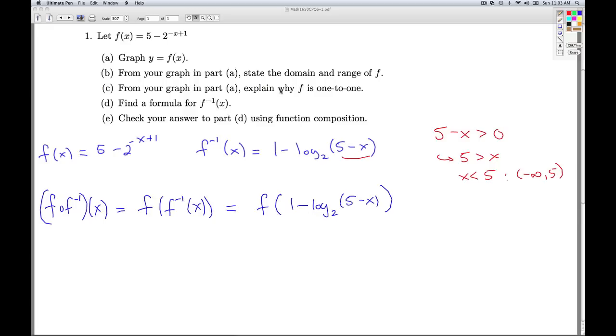So let's toss this in to the formula I have for f of x. Once again, I'm going to give myself some room. Everywhere I see an x in the formula for f, so up there in the exponent, I've got to substitute in that expression. So it's 5 minus 2 to the negative quantity 1 minus log base 2 of 5 minus x, and plus 1.